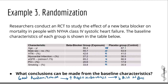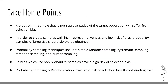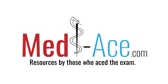In summary, the goal of randomization is to produce two random samples which are both representative of the target population. Key takeaways: a study with a sample not representative of the target population will suffer from selection bias; probability samples of large size should always be obtained to create representative samples with low risk of bias; probability sampling techniques include simple random sampling, systematic sampling, stratified sampling, and cluster sampling; and both probability sampling and randomization lower the risk of selection bias and confounding bias. Thank you for watching and see you in the next chapter!